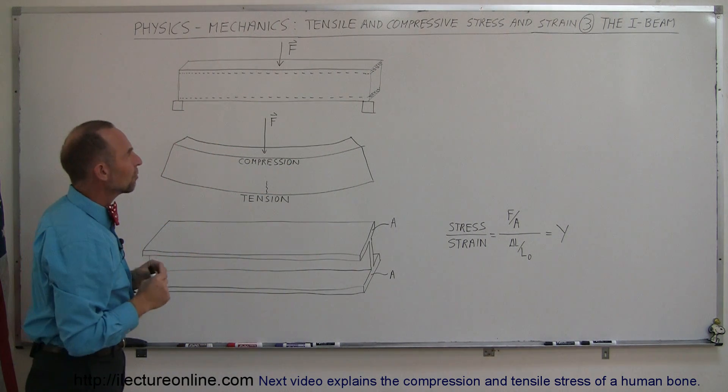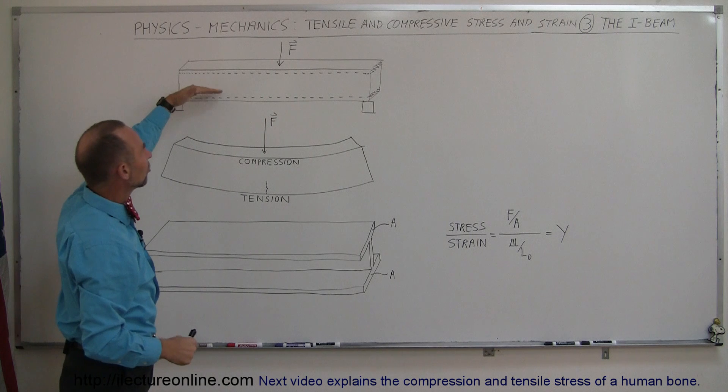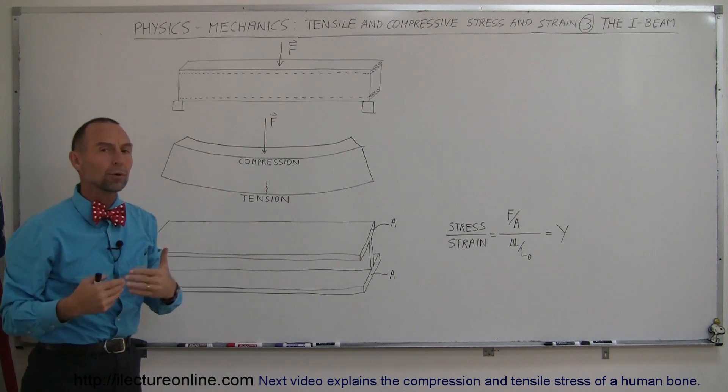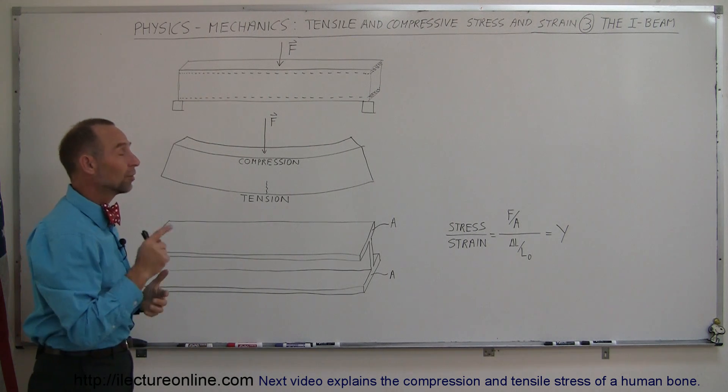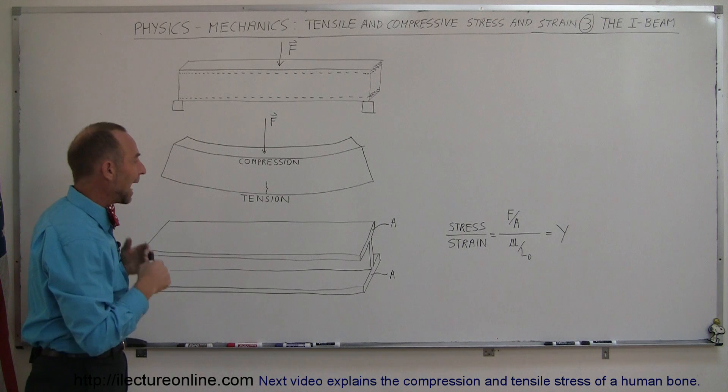So those are the two portions of the beam that are most important, and the portion in the middle is not nearly as important for the strength of the beam. Therefore, we build what we call the I-beam.